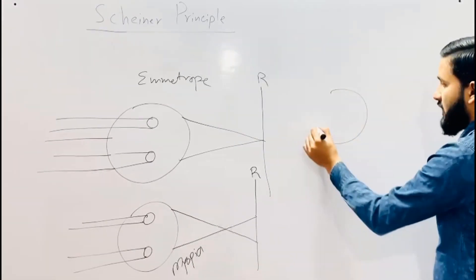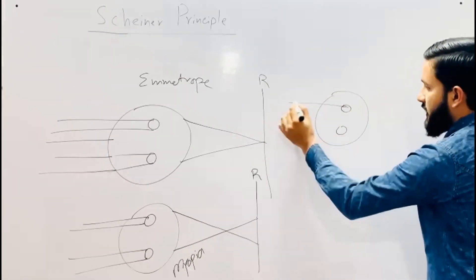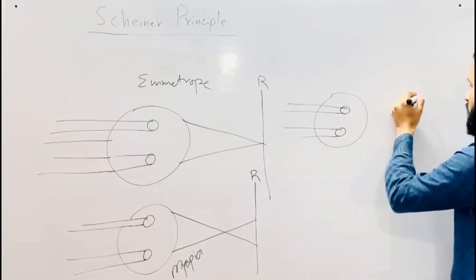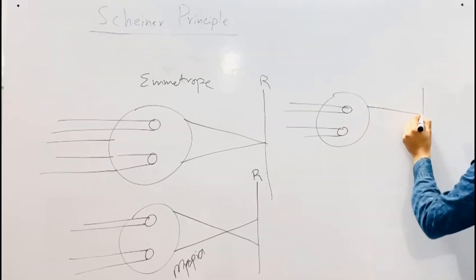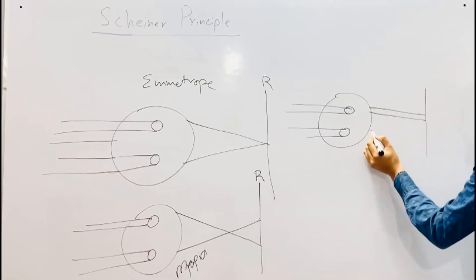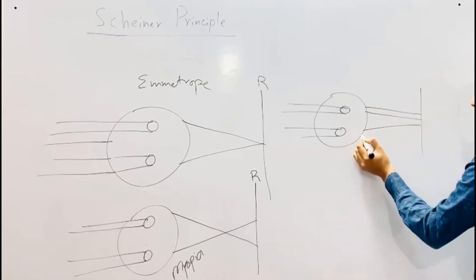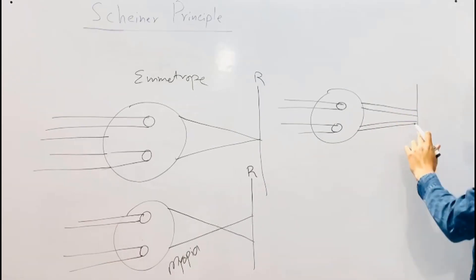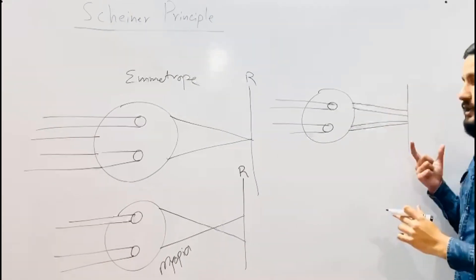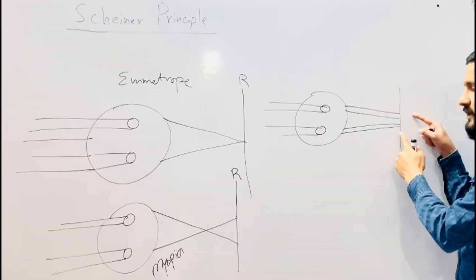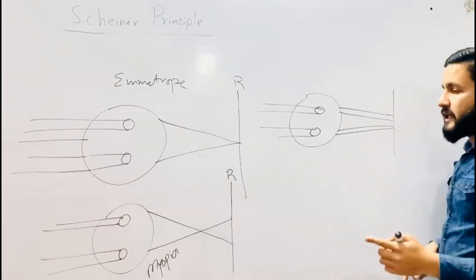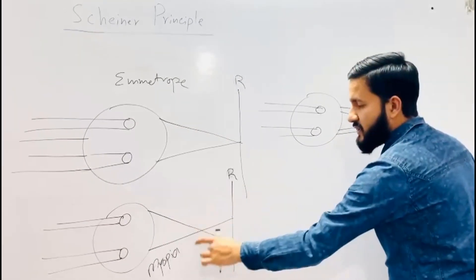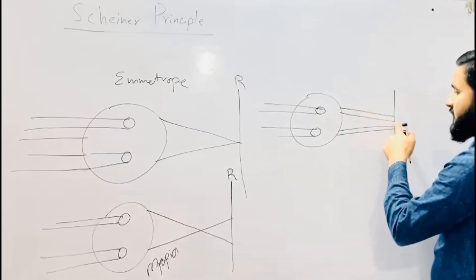In the case of hypermetropia, the light rays from the two pinhole apertures are again not focused on the retina — they go behind it. As a result, two light spots are again found on the retina. So when two light spots are formed, this indicates a refractive error.